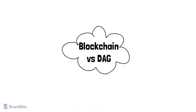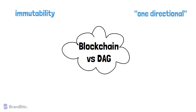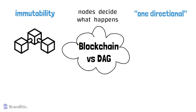Next, blockchain versus DAG. The word 'acyclic' in directed acyclic graphs implies that operations are strictly one-directional. Both platforms share immutability and consensus-based systems where nodes decide what happens, offering some semblance of democracy. However, their data structures differ fundamentally — blockchain arranges transactions in blocks, where information pertaining to a particular transaction makes up a single block, and succeeding transactions result in the formation of newer blocks.